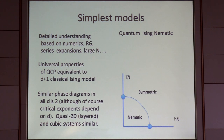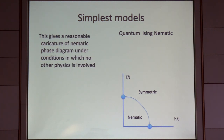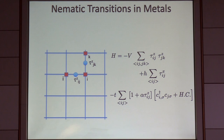In particular, if one is thinking of a quasi-2D layered system with weak couplings between layers, really nothing much about this phase diagram will depend on the strength of the coupling between the layers. Now let's get one step more complicated and ask what happens if we couple this Ising nematic degree of freedom to electrons. This is the simplest model in which I can do that.